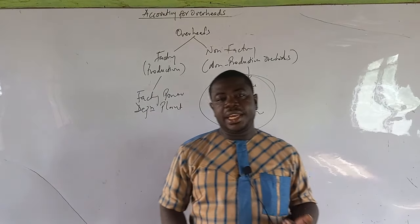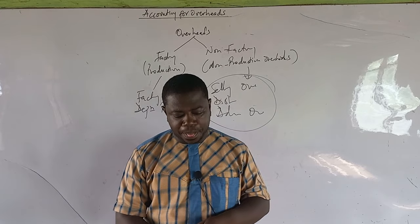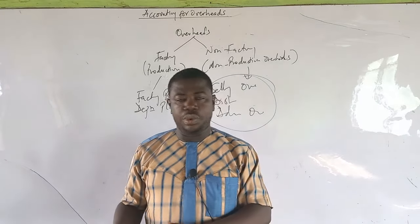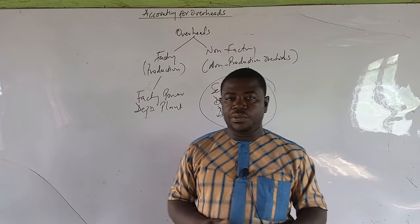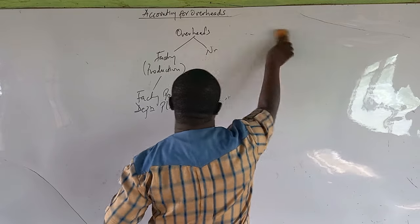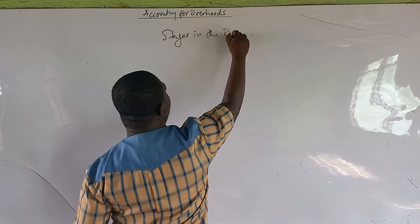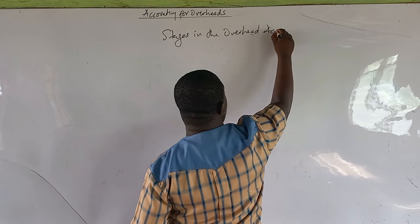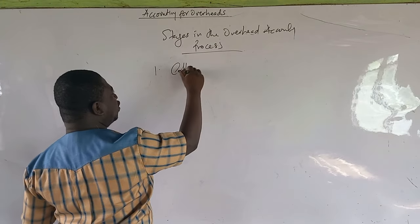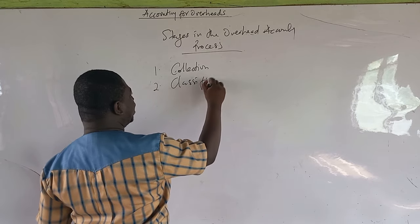The stages in the overhead accounting process are: overhead collection, then classification, then allocation and apportionment, and finally overhead absorption. So we collect overheads, classify them, allocate and apportion them, and then do absorption.